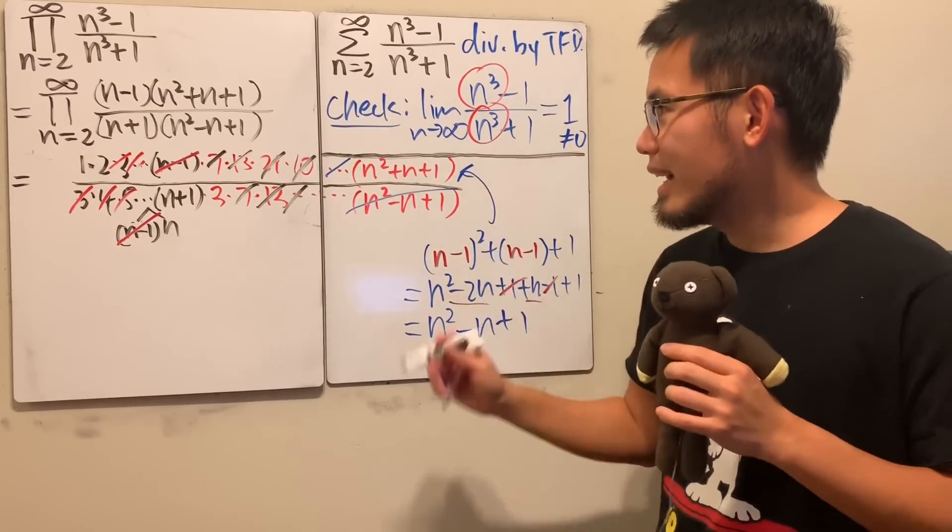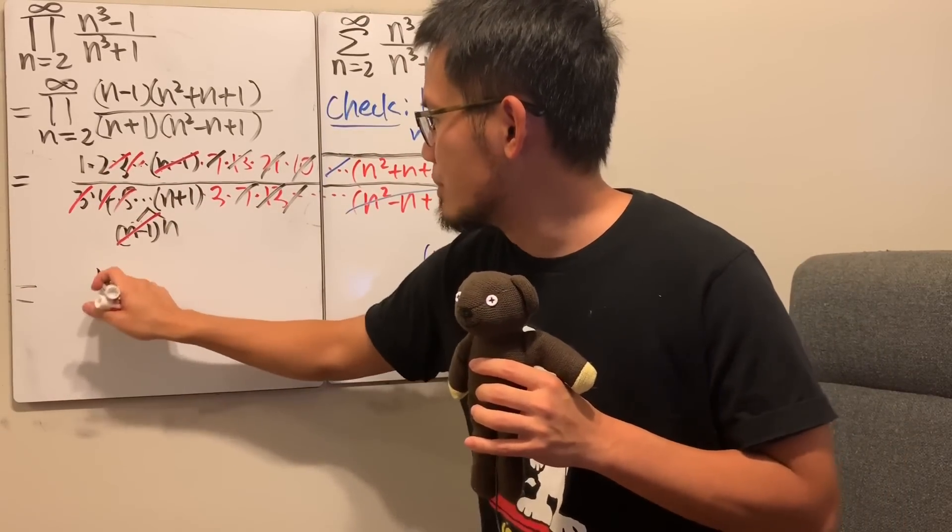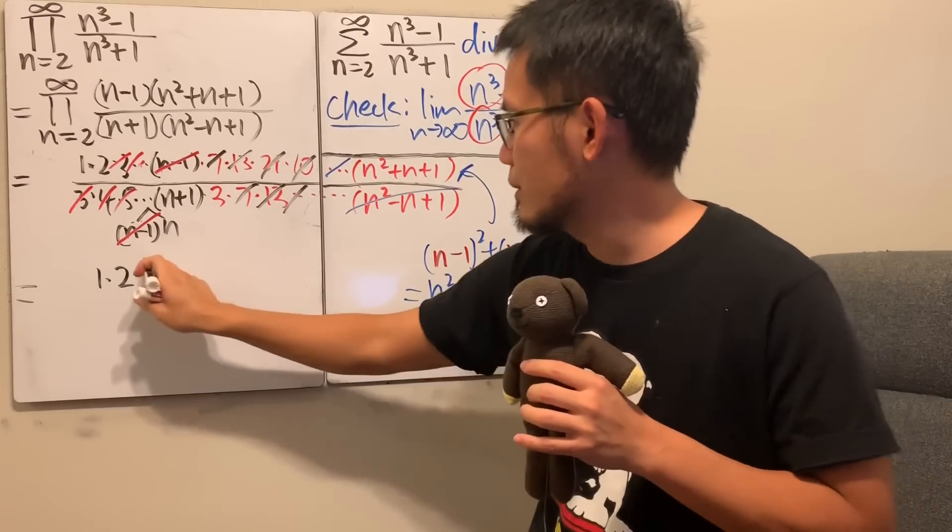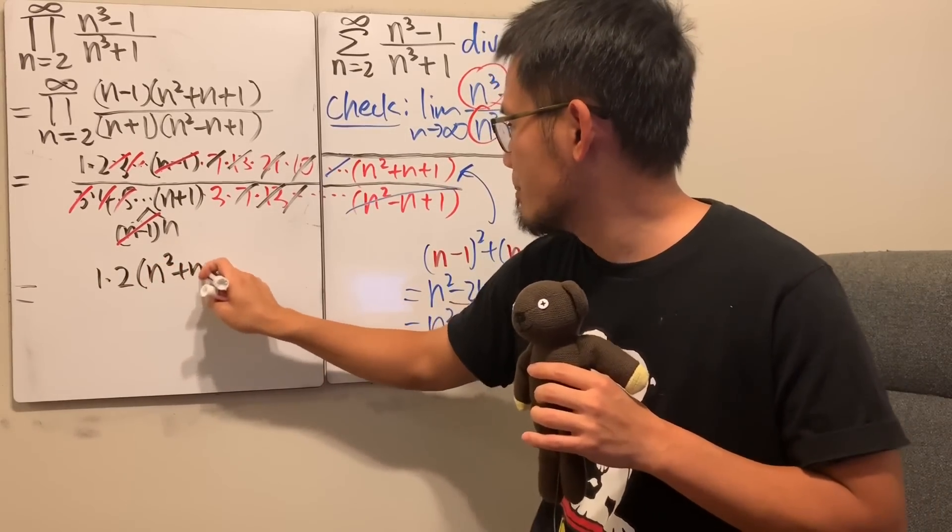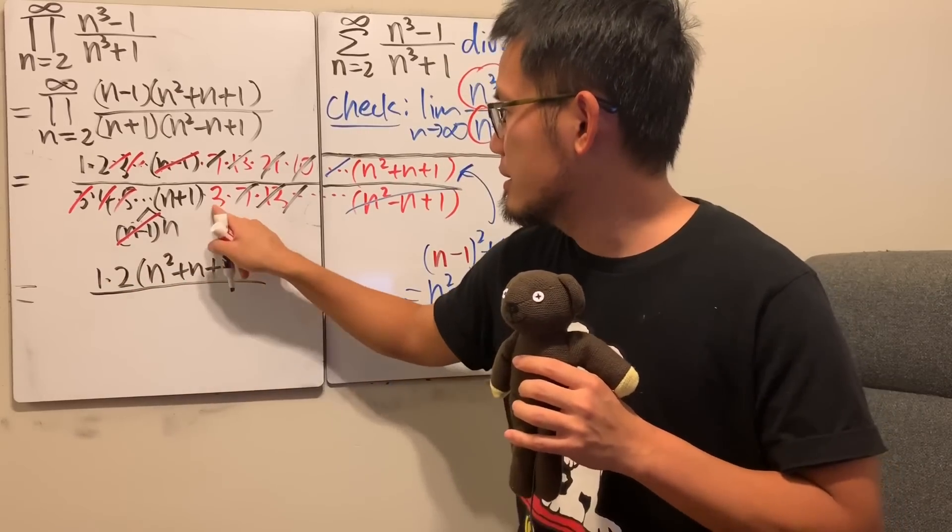So, in the end, what we have is, this is just equal to 1 times 2, and then the top is just that guy, which is n square plus n plus 1. And then, on the bottom, we have this guy,